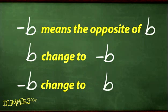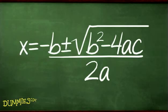And if b is negative, then change it to positive in the formula. Second, be careful when simplifying under the radical. The order of operations dictates that you square the value of b first and then multiply the last three factors together before subtracting them from the square of b.